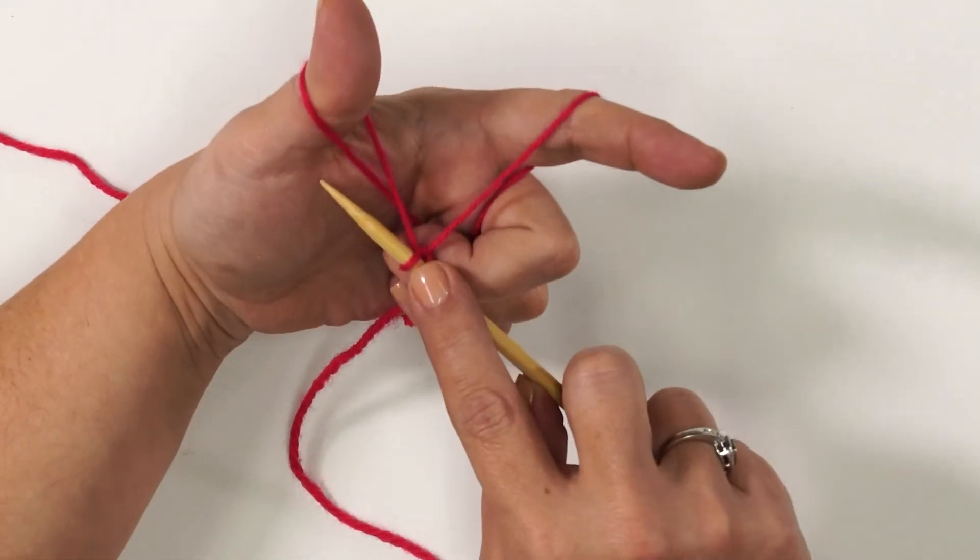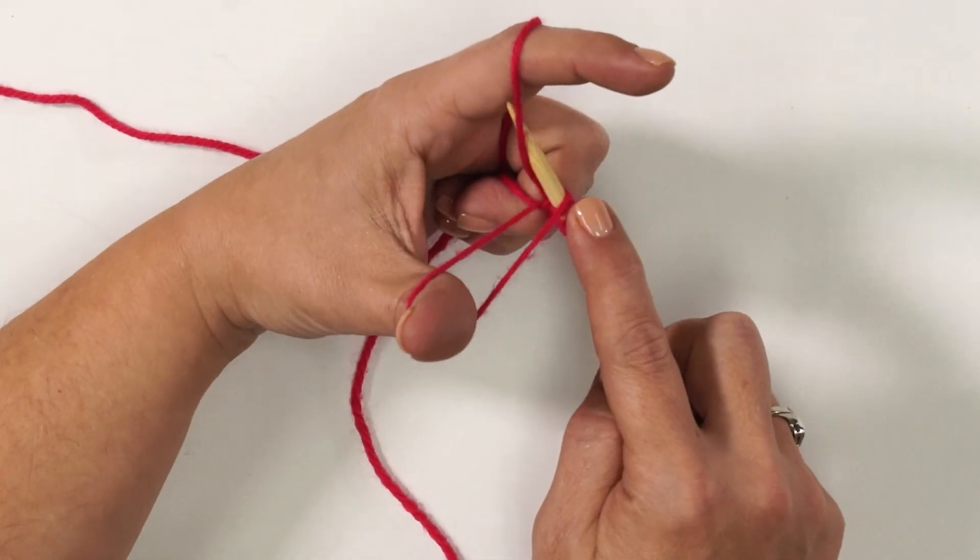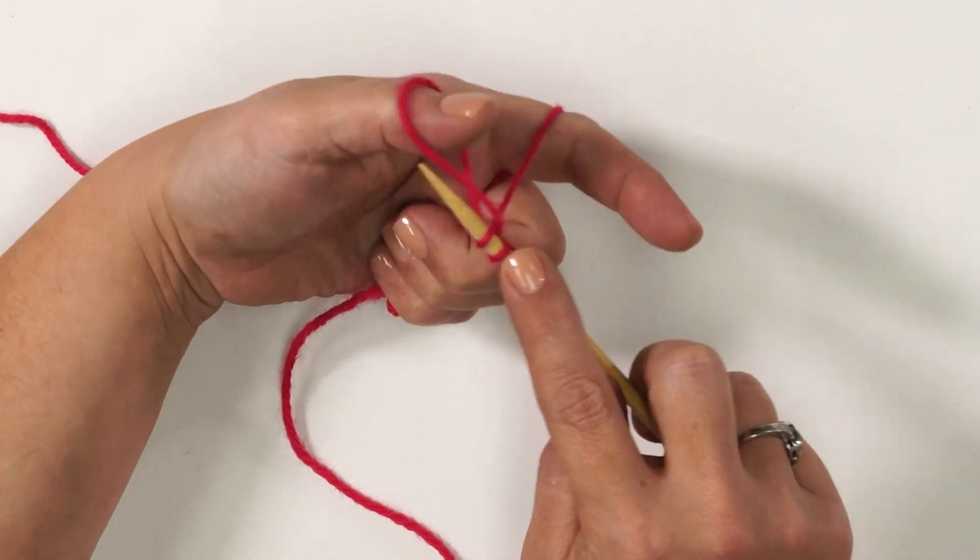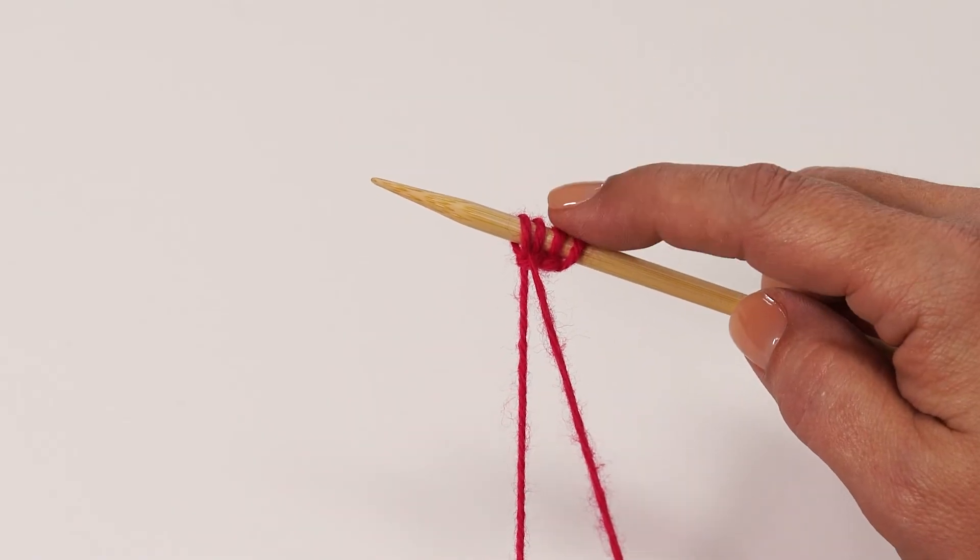Scoop it under, over the index finger, and back through the loop. Now we have four stitches.